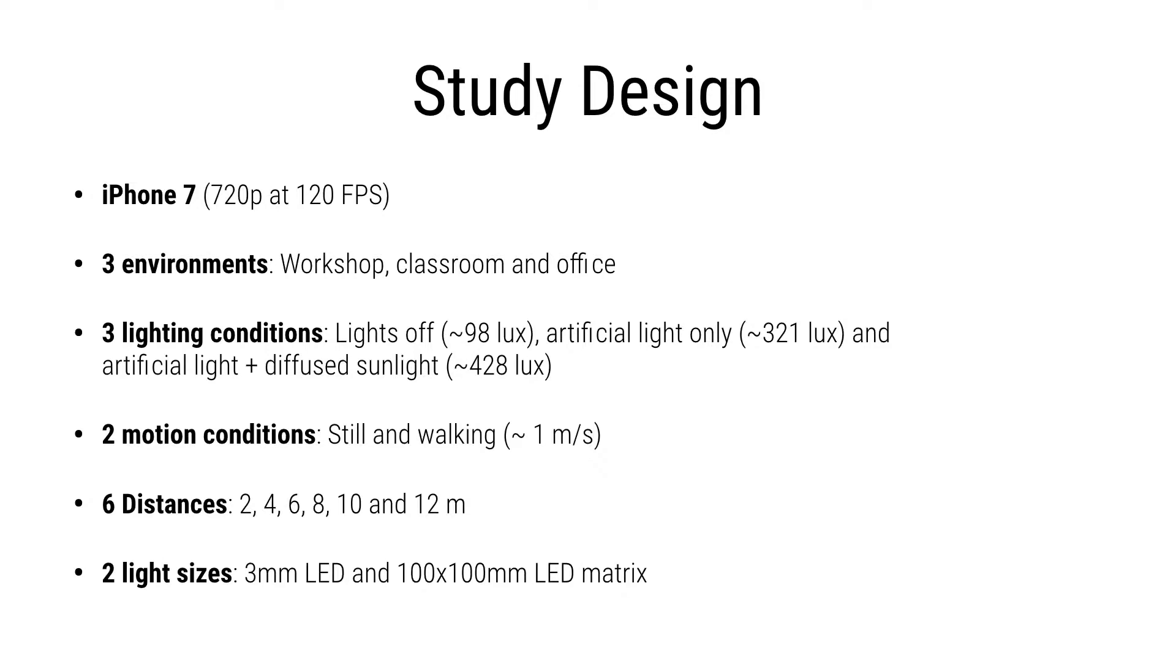As you can see in this video, which has a conference phone that displays its information, we evaluate our light anchor system and the study design behind it. To evaluate the efficacy of our system, we captured data from three environments: a workshop, classroom, and an office to simulate three different lighting conditions and effects of ambient lights. We did this for two motion conditions, one in which we fixed the phone on a tripod and the second in which a person was walking with the phone across six different measures of distances ranging from two to 12 meters.